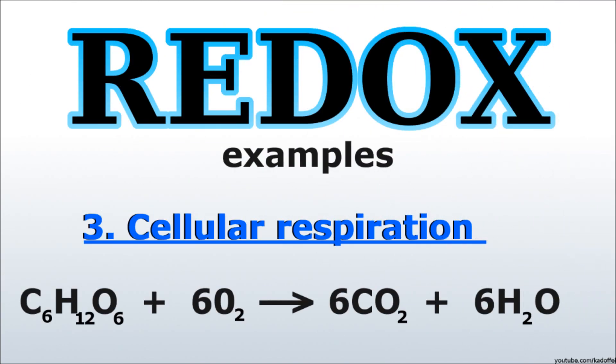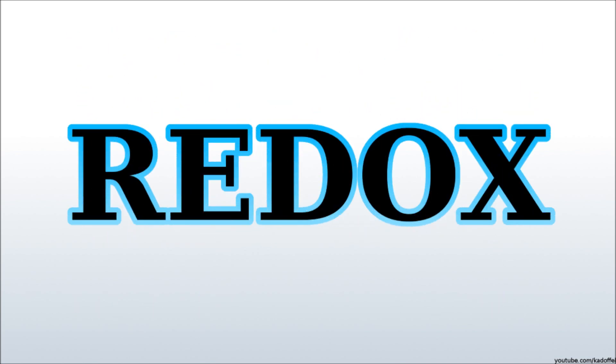The third and last example represents something that is happening in your body continuously. It is called cellular respiration. Glucose and oxygen react to form carbon dioxide and water. Those were just a few examples of the many redox reactions, with many of them affecting our daily lives. You should by now have an idea of what a redox reaction is.